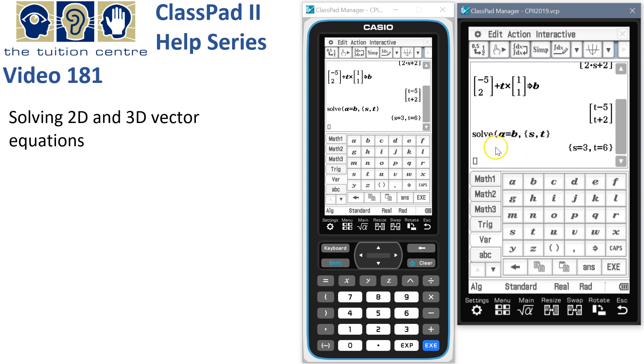We press go and it says the paths intersect when S is 3 and T is 6.